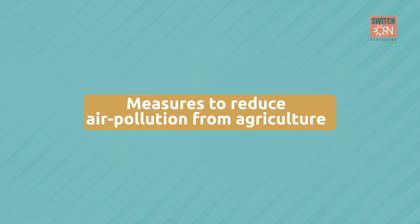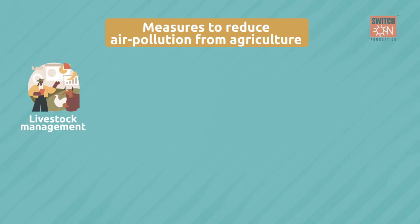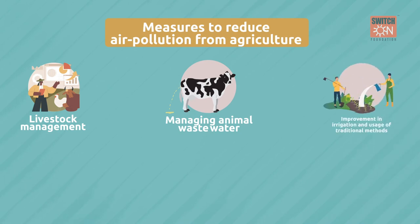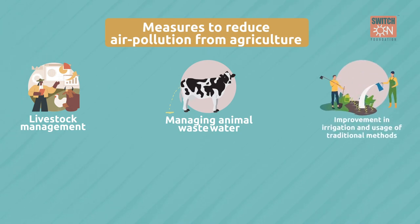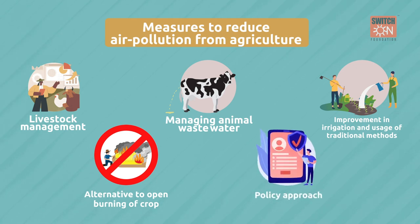Measures to reduce air pollution from agriculture include: livestock management such as using livestock manure for vermicomposting, cultivating earthworms and biodegradable waste, and managing animal wastewater. Improvement in irrigation and usage of traditional methods can help manage crop nutrient levels and agri-waste. Alternatives to open burning of crop residue — like using machinery to manage stubble rather than burning — and a policy approach towards subsidising environment-friendly agri-products and practices are also recommended.